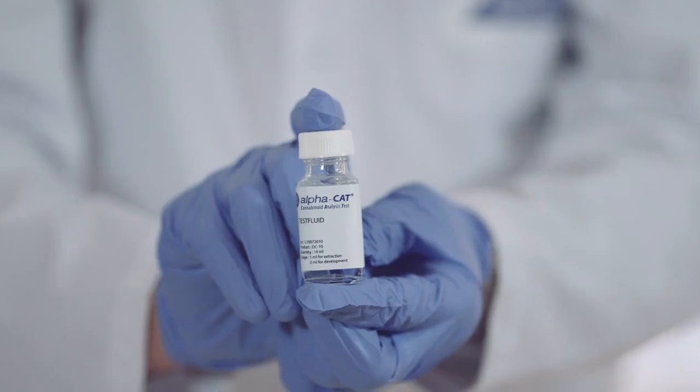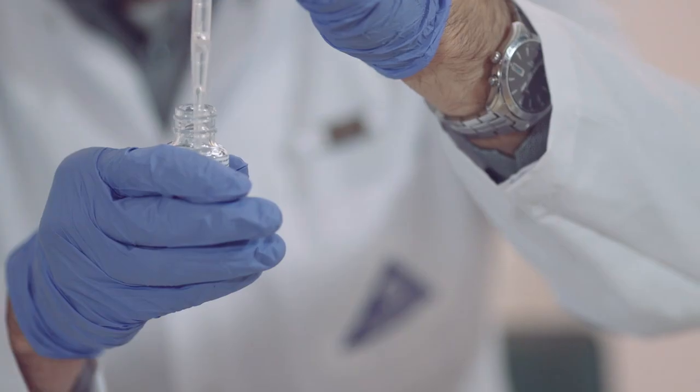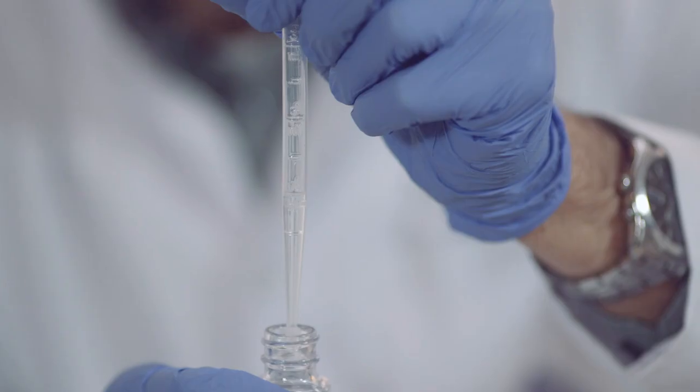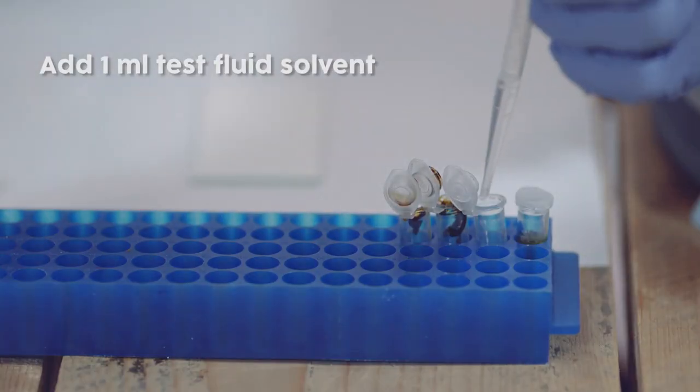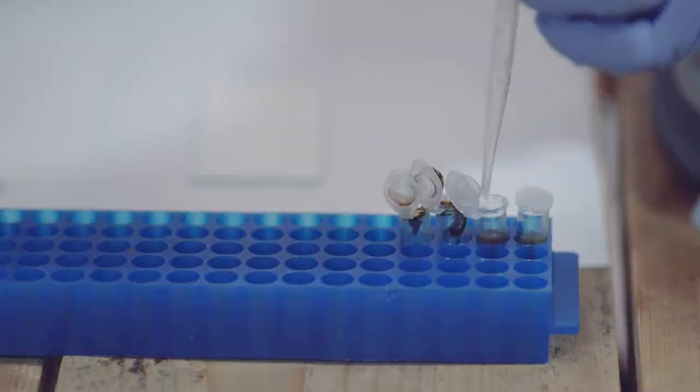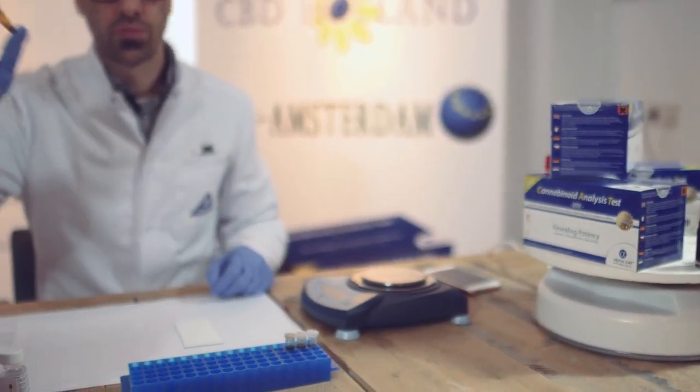After you have taken the test fluid and pipette out of the package, collect one milliliter of this fluid with the pipette and add it to the extraction tube. Quickly close the lid of the extraction tube and shake vigorously for 10 seconds.